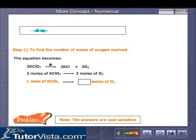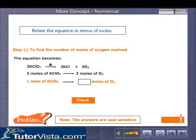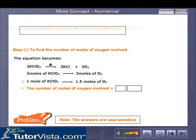You are right again. Relating the equations in terms of moles, the equation becomes 2KClO3 on heating gives 2KCl plus 3O2. Two moles of potassium chlorate give 3 moles of oxygen. Therefore, 1 mole of potassium chlorate gives how many moles of oxygen? The second blank space you see is for the units.